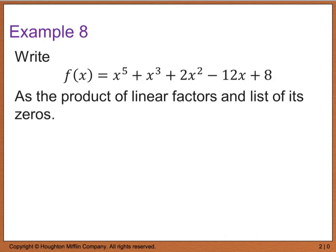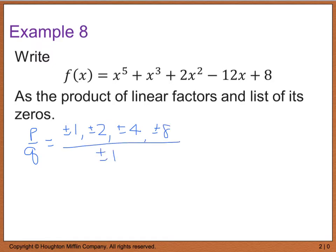Example 8 says to write f of x as the product of linear factors and list the zeros. The first thing we're going to do is use our rational zero test, which is p divided by q. That's going to give us plus or minus 1, plus or minus 2, plus or minus 4, and plus or minus 8, all divided by plus or minus 1. So my possible zeros are plus or minus 1, plus or minus 2, plus or minus 4, and plus or minus 8 — a total of 8 possible real zeros.